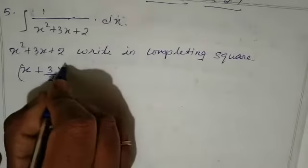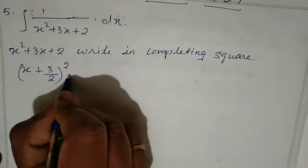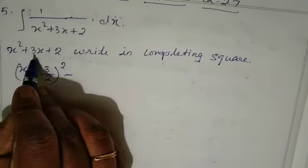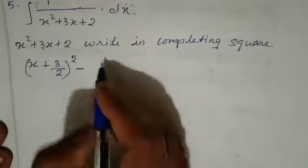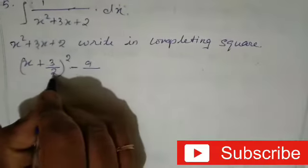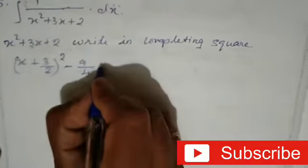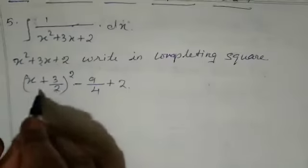Whole square and then minus. If 3 is there, we have to write 3 divided by 2, so 9 divided by 4 is there. And then finally write this term plus 2.